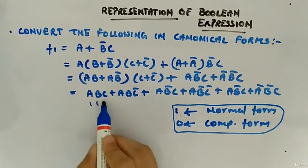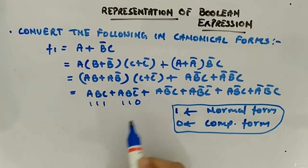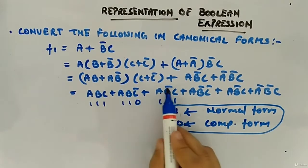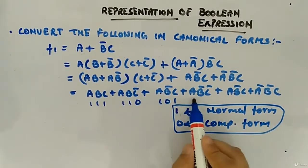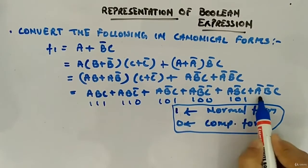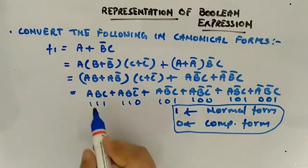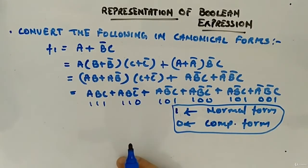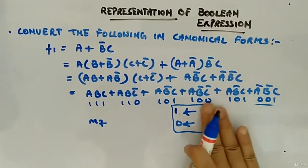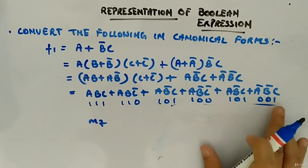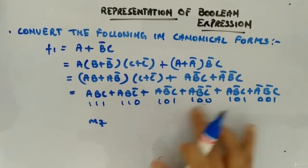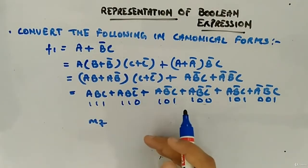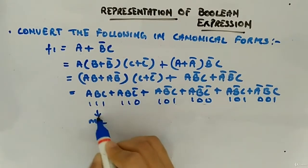So depending upon this, what this will be 111, this will be 110, this will be 101 because the bar means complemented form means zero. 100, 001. We will always follow one as normal and zero as complemented. So this is m7, now I will remove this because my work is done here for marking this.